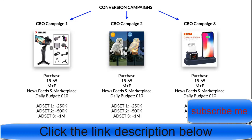We're going to start with three different conversion campaigns. The amount of campaigns you run is completely relative to how many products you want to test. As a rough rule of thumb, I suggest a minimum of three products. If you want to test four or five products, that's fine — just make sure you have one product per campaign. Each campaign is going to be a CBO campaign.